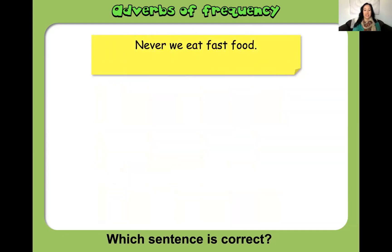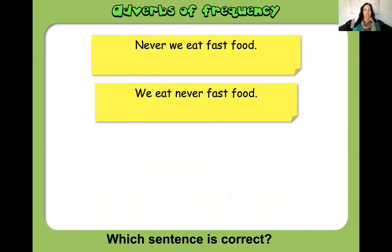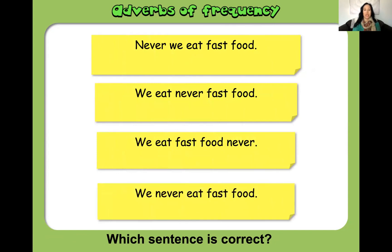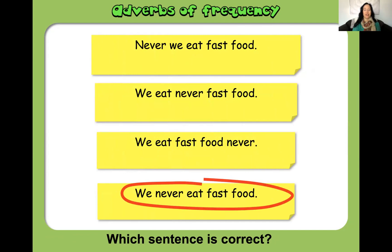Which sentence is correct? 'Never we eat fast food', 'We eat never fast food', 'We eat fast food never', or 'We never eat fast food'? The answer is 'We never eat fast food.'